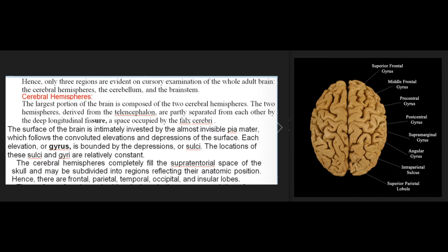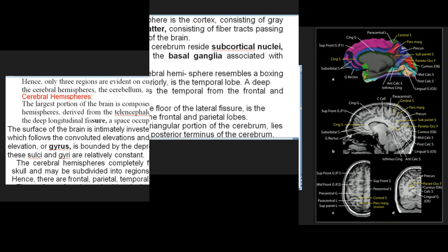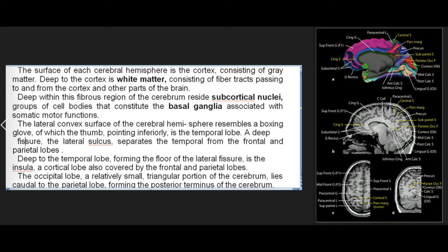The largest portion of the brain is composed of the two cerebral hemispheres, derived from the telencephalon, and partly separated from each other by the deep longitudinal fissure occupied by the falx cerebri. The surface of the brain is intimately invested by the almost invisible pia mater, which follows the convoluted elevations and depressions of the surface. Each elevation or gyrus is bounded by depressions called sulci. The cerebral hemispheres completely fill the supratentorial space and may be subdivided into frontal, parietal, temporal, occipital, and insular lobes. The surface of each cerebral hemisphere is the cortex, consisting of gray matter; deep to the cortex is white matter consisting of fiber tracts.